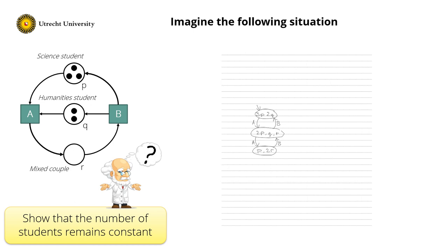In M0 I have three tokens in place P and two tokens in place Q — five tokens total, so five students. But in M1 I only have four tokens: two in P, one in Q, one in R. So by just counting the number of tokens I don't get there. And if I had 300 science students and 299 humanities students, the reachability graph would be gigantic. Can we show it in a smarter way? That is the topic of this clip.